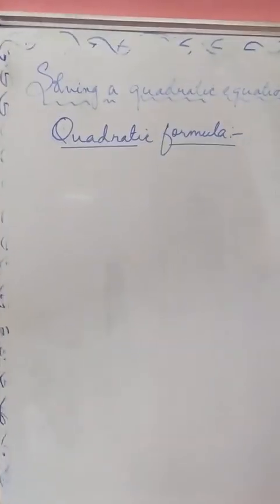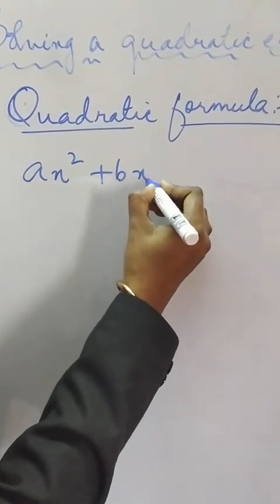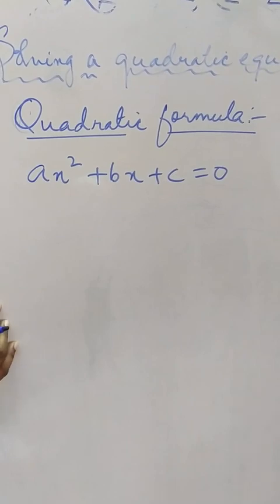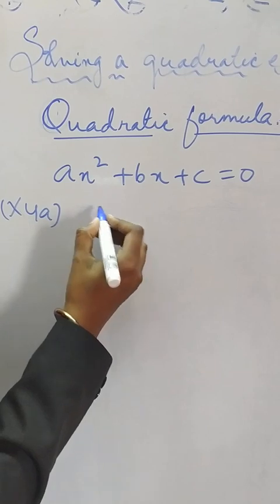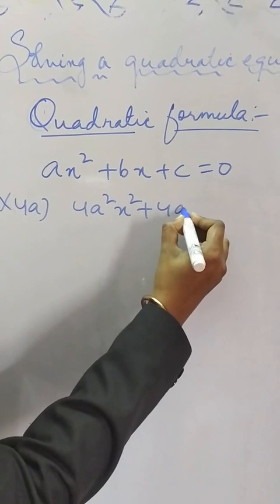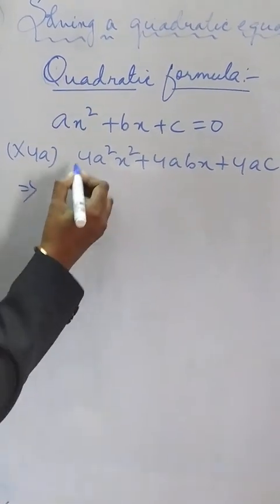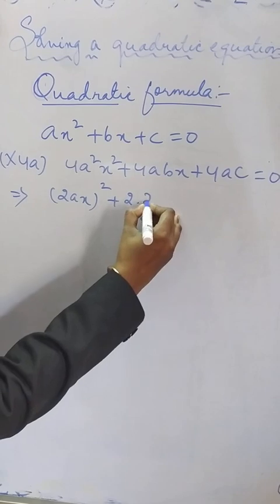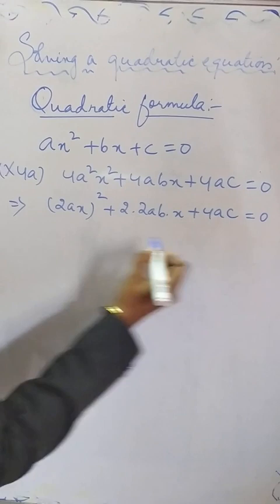Before we go to the quadratic formula I would like to derive it. We all know that ax² + bx + c = 0 is the standard form of a quadratic equation. When we multiply with 4A throughout the whole equation, we get 4a²x² + 4abx + 4ac = 0, which can be written as (2ax)² + 2·(2abx) + 4ac = 0.